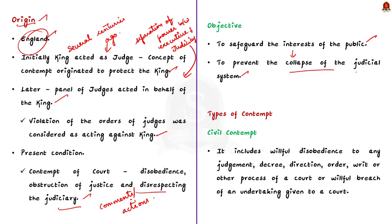Contempt of court can be of two kinds: civil contempt and criminal contempt. Civil contempt means willful disobedience to any judgment, decree, direction, order, writ, or other process of a court, or willful breach of an undertaking given to a court.